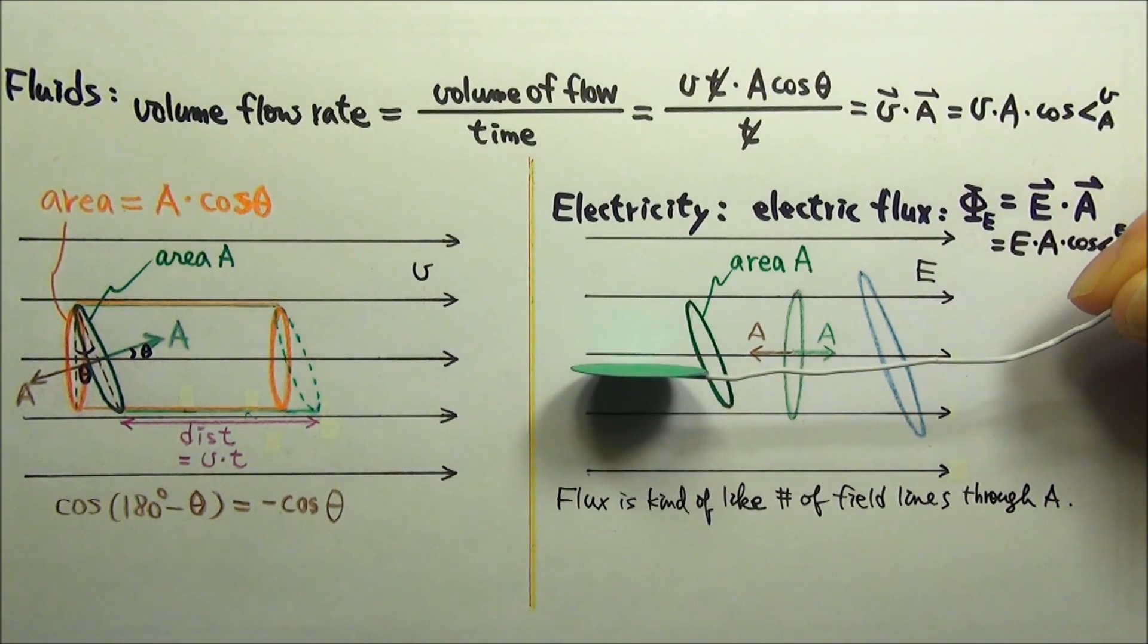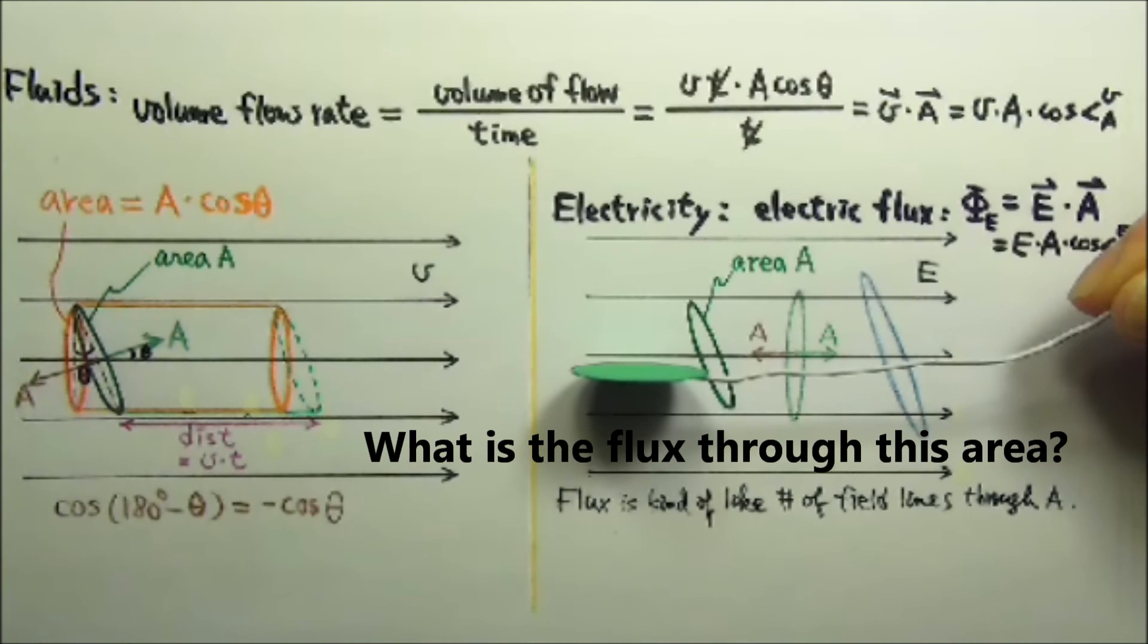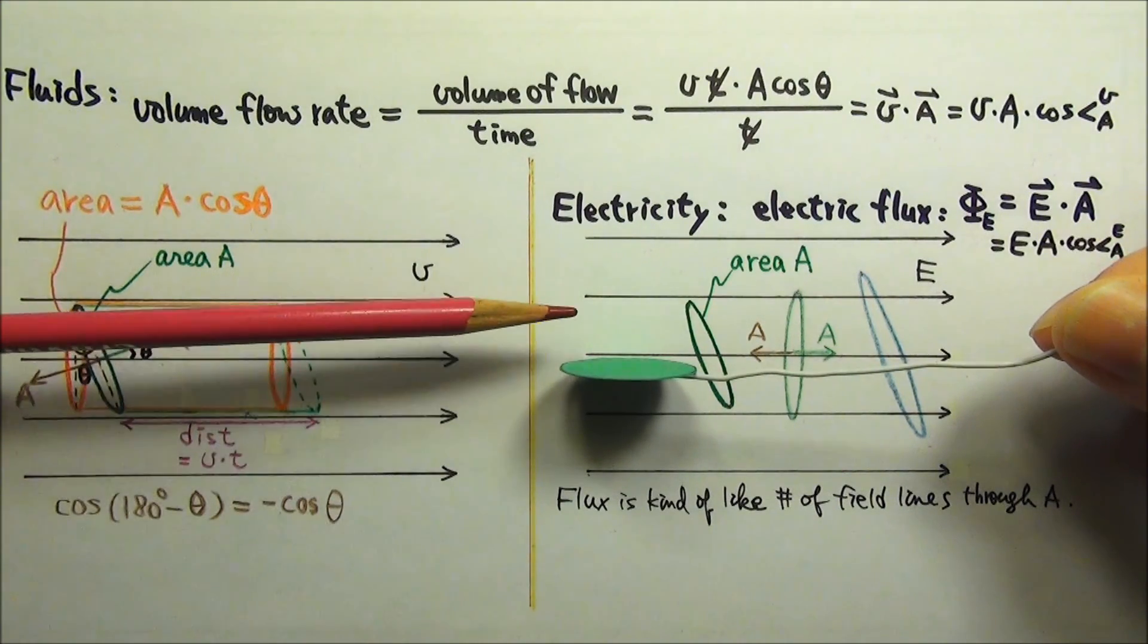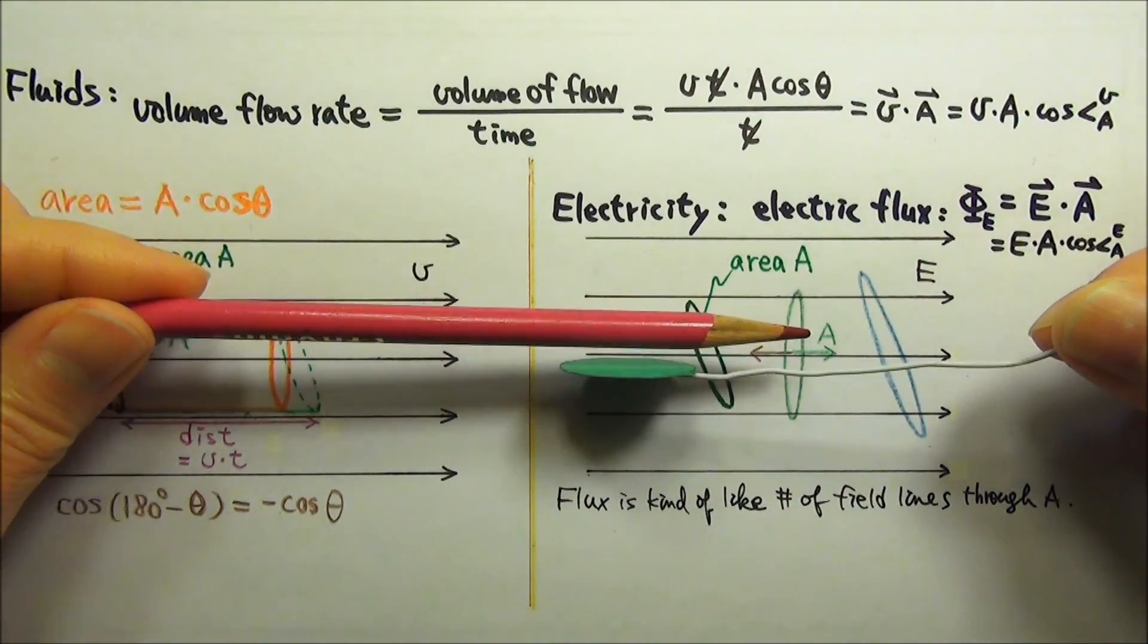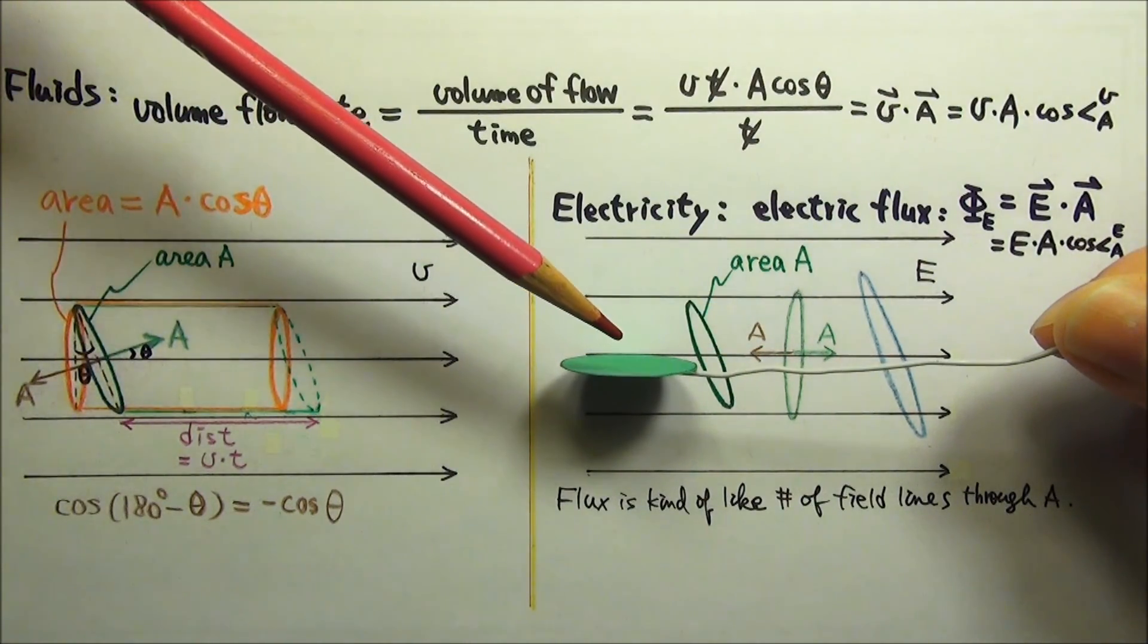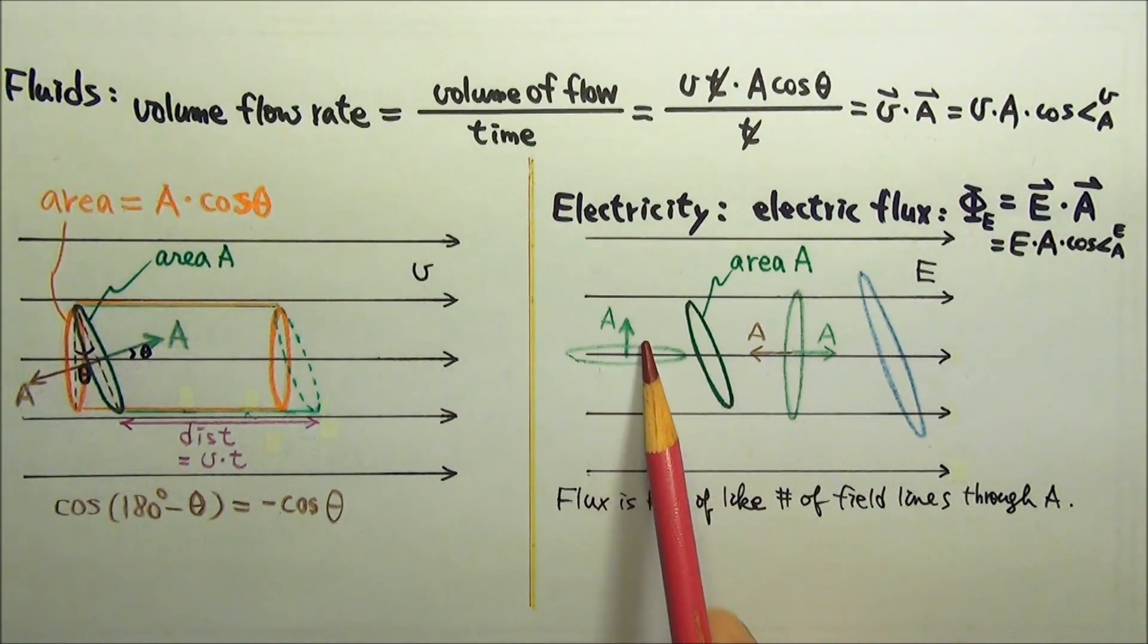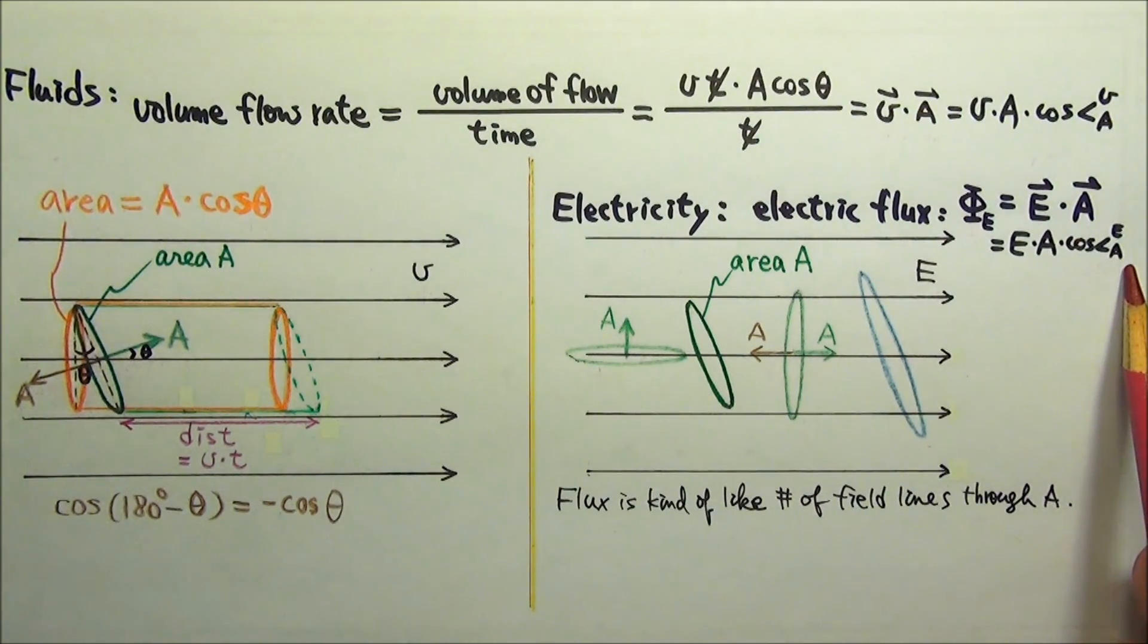And if the area is oriented like this, what is the flux through the area now? How many field lines would go through the area? Zero. The field lines would just go next to the area, none of the field lines would go through the area. The angle between E and the normal vector A is 90 degrees, and the cosine 90 degrees is 0, so the flux is 0.